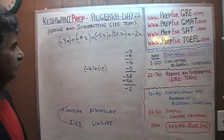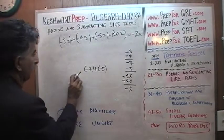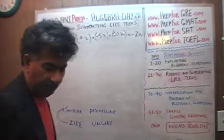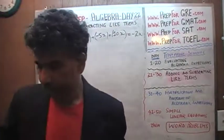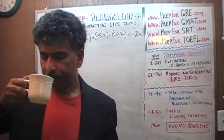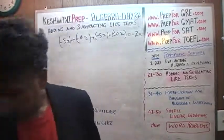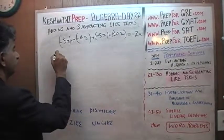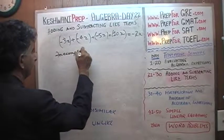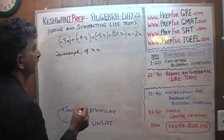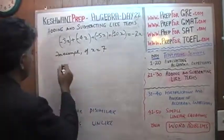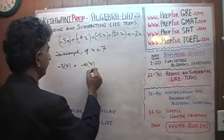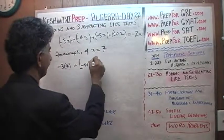If it makes it easier for you to see, you can actually substitute numbers in and verify. For example, if x happens to be 7, then what we have is negative 3 times 7, plus negative 4 times 7.